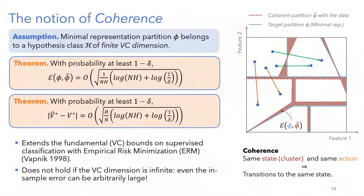For those who like statistical learning: there's a famous result by Vapnik that says in binary classification, any classifier that agrees with the data will ultimately converge to the true classification out-of-sample. This is kind of equivalent to that. Agreeing with data in binary classification is equivalent to being coherent with transition data when learning a dynamic representation of the system. We extend this fundamental statistical learning bound to the dynamic systems setting.